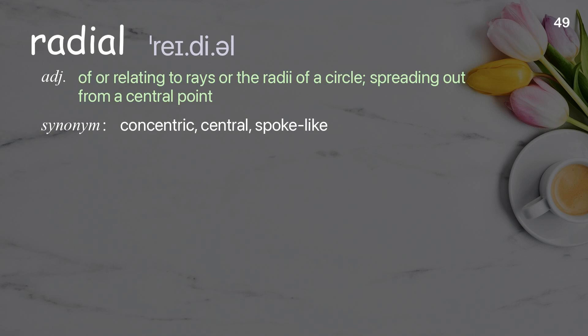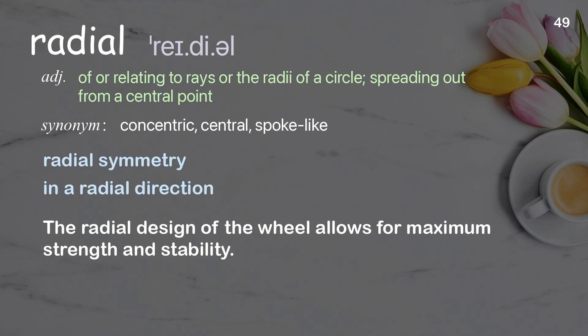Radial: of or relating to rays or the radii of a circle; spreading out from a central point. Examples: radial symmetry, in a radial direction. The radial design of the wheel allows for maximum strength and stability.